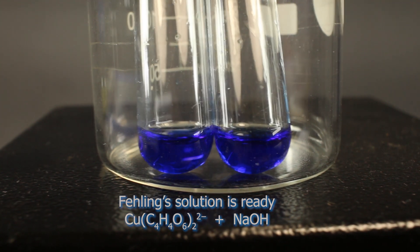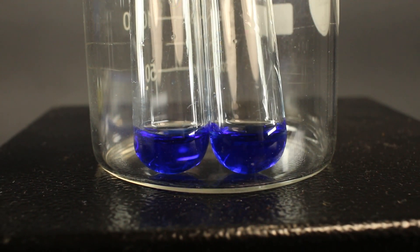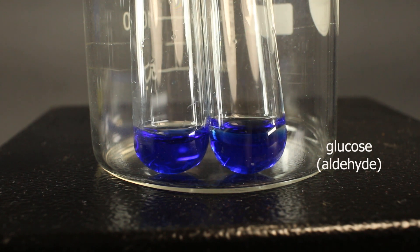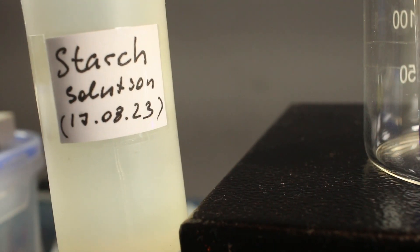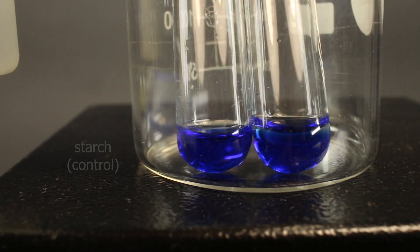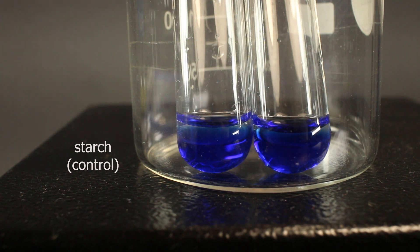Now, Fehling solution is ready, and here are the chemicals which we are going to test. Glucose is an aldehyde, at least it has this conformation in water solution. And starch for control, which is not an aldehyde, because it's polymer of glucose. It cannot open up.